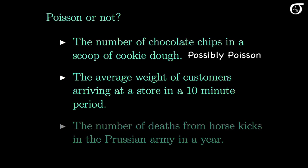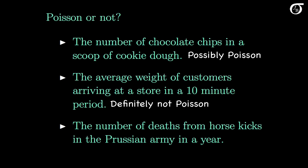How about the average weight of customers arriving at a store in a 10 minute period? The average weight is a random variable, but it's not a count of a number of events, so it would definitely not have a Poisson distribution. How about the number of deaths from horse kicks in the Prussian army in a year? Here we're dealing with a count again, and this is a classic Poisson example with a classic dataset from the 1800s. If these deaths are occurring randomly and independently, then it would be fine to model this with a Poisson distribution, and the actual dataset showed the Poisson fit the data quite well. But the independence assumption could easily be violated — perhaps horses go crazy every now and then and take out as many people as they can.